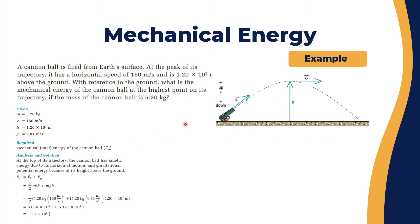Let's take a quick example on how to calculate mechanical energy. We have a cannonball that is fired from Earth's surface. At the peak of its trajectory, it has a horizontal speed of 160 m/s — we call it V2 — and it is 1.2×10³ meters above the ground. What is the mechanical energy of the cannonball at the highest point on its trajectory, if the mass of the cannonball is 5.2 kilograms?